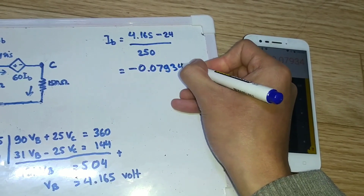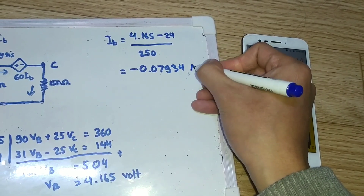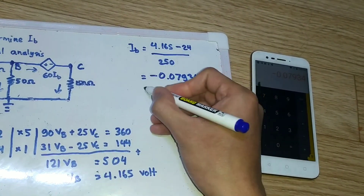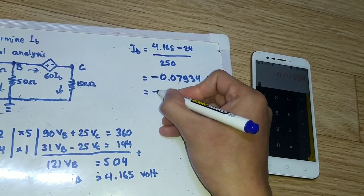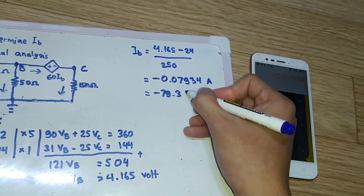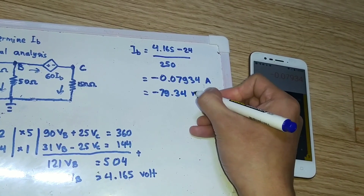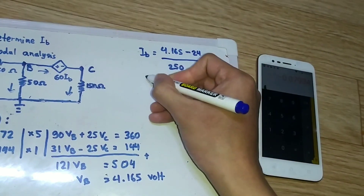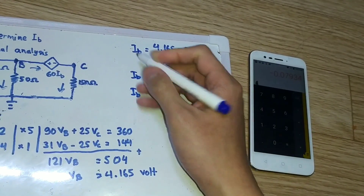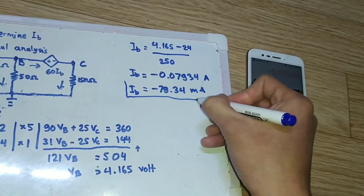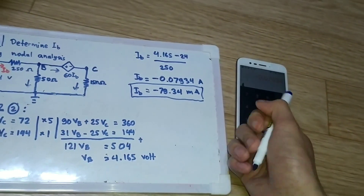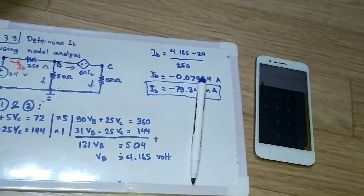Converting to milliamperes by multiplying by 1000, we get approximately -79.34 milliamperes. This is IB, and this is our final answer. Thank you for watching, and I hope this helps.